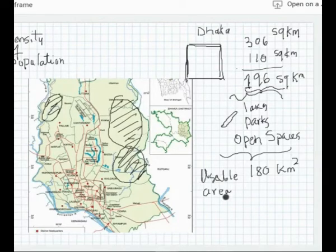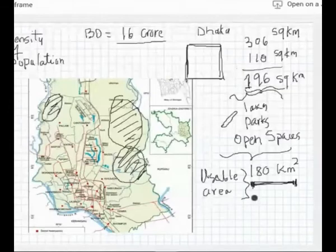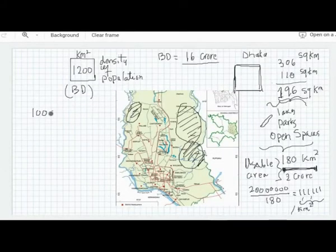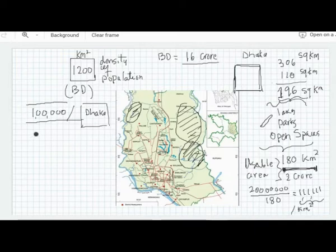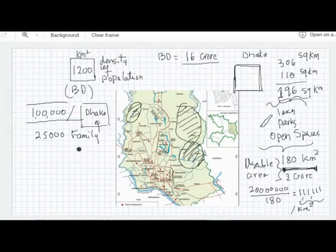How many population in Dhaka? About two crore. Let's say two crore people live in Dhaka city. Per square kilometer, see the difference between Bangladesh and Dhaka: this is one lakh per square kilometer. How many families? Divided by four, so 25,000 families.